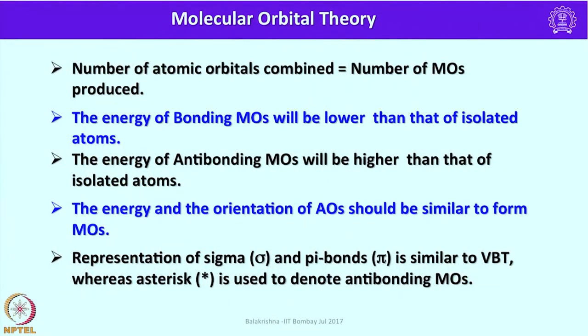The number of atomic orbitals combined is equal to the number of molecular orbitals generated. For example, if I use four atomic orbitals, I will have four molecular orbitals — two may be bonding and two will be antibonding. The energy of bonding molecular orbitals will be lower than that of the isolated atoms, and the energy of antibonding molecular orbitals will be higher. The energy and orientation of atomic orbitals should be similar to form molecular orbitals — when combining two atomic orbitals, their energies should be comparable. If the energy difference between the two combining atomic orbitals is considerable, effective molecular orbitals cannot be generated and no bonding takes place.